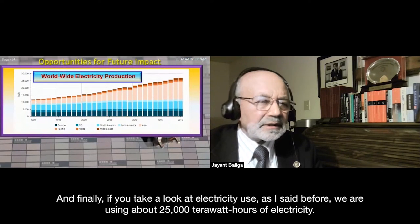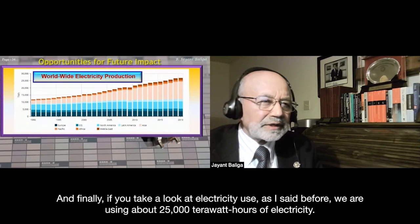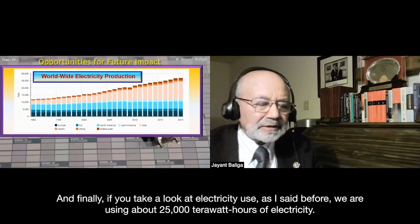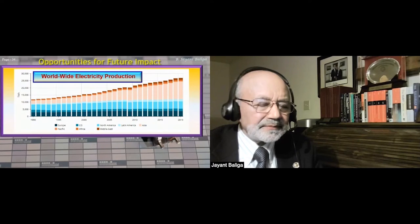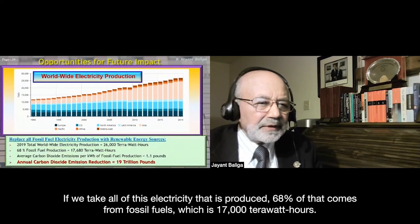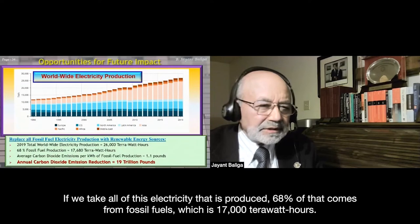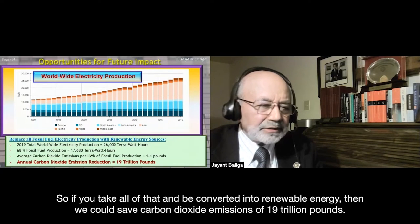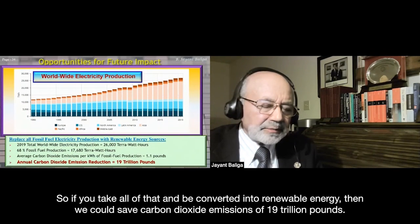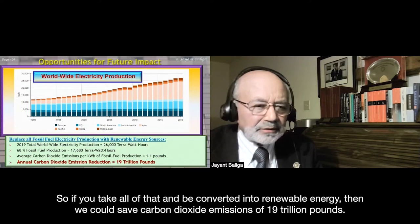Finally, looking at electricity use — about 25,000 terawatt-hours worldwide — 68% comes from fossil fuels, which is 17,000 terawatt-hours. If all of that were converted to renewable energy, we could save CO2 emissions of 19 trillion pounds.